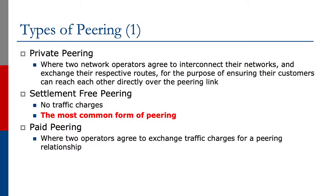We will now look at the different types of peering. Private peering is where two network operators agree to interconnect their networks and exchange their respective routes for the purpose of ensuring their customers can reach each other directly over the peering link. Settlement-free peering is where there are no traffic charges and is the most common form of peering on the Internet today.